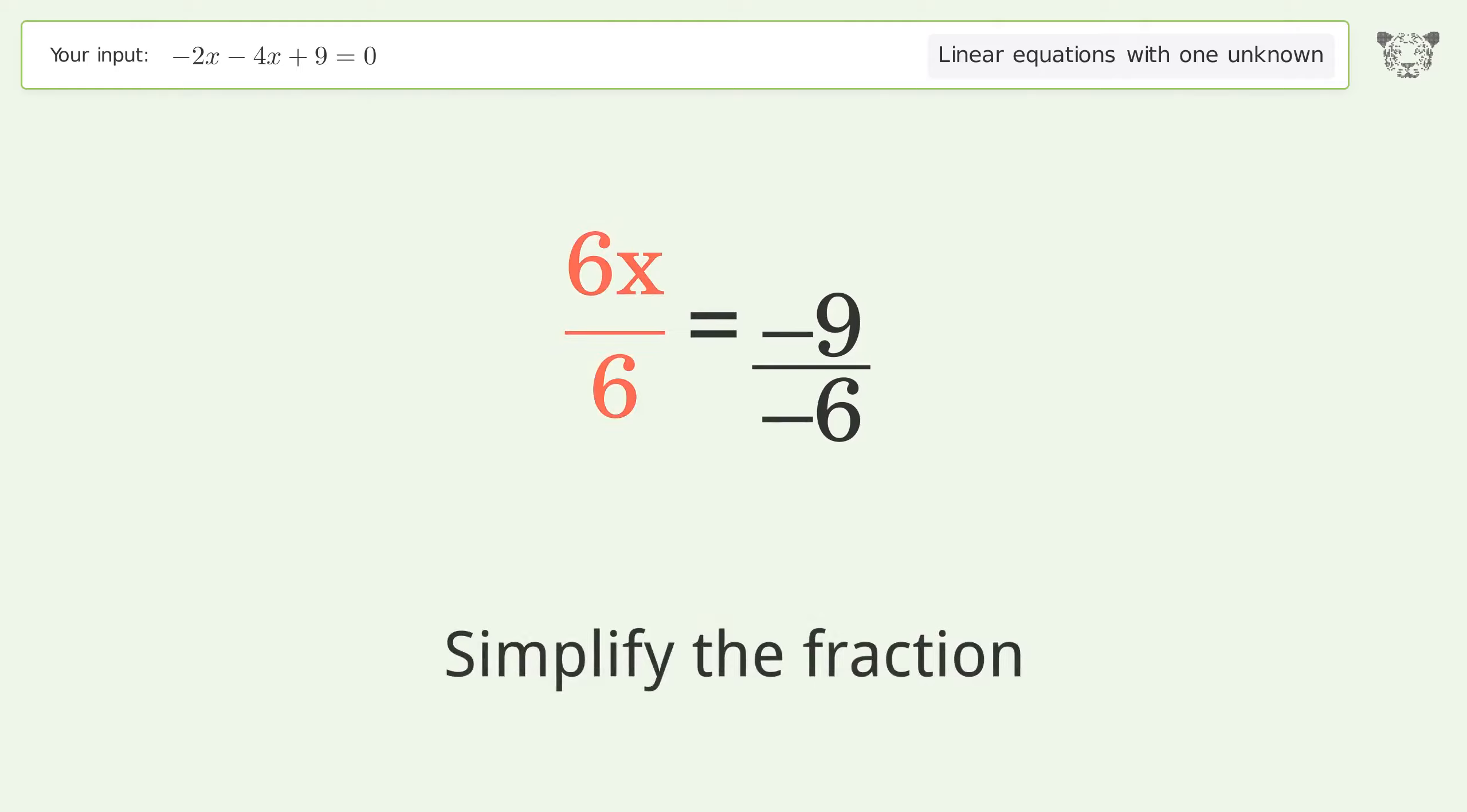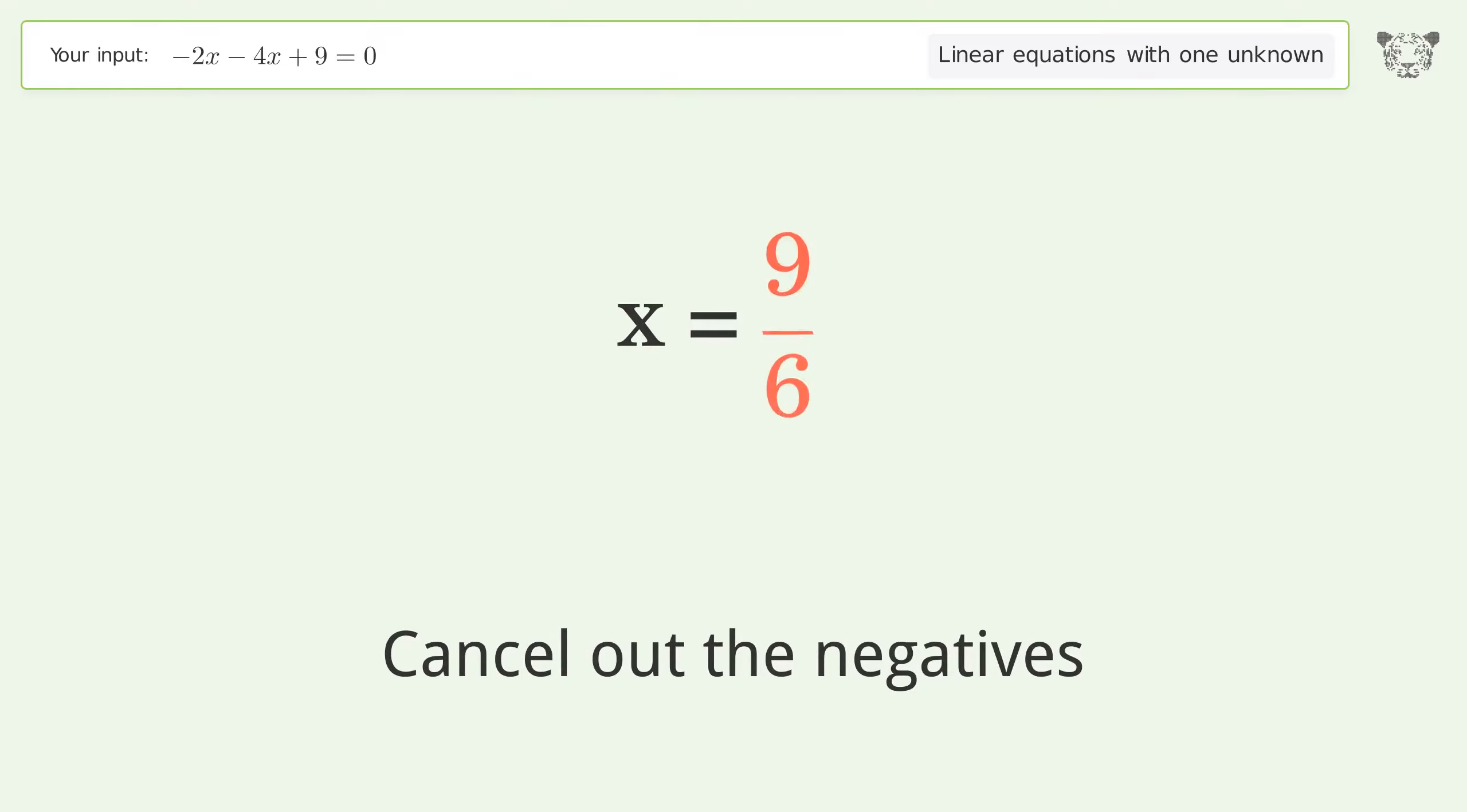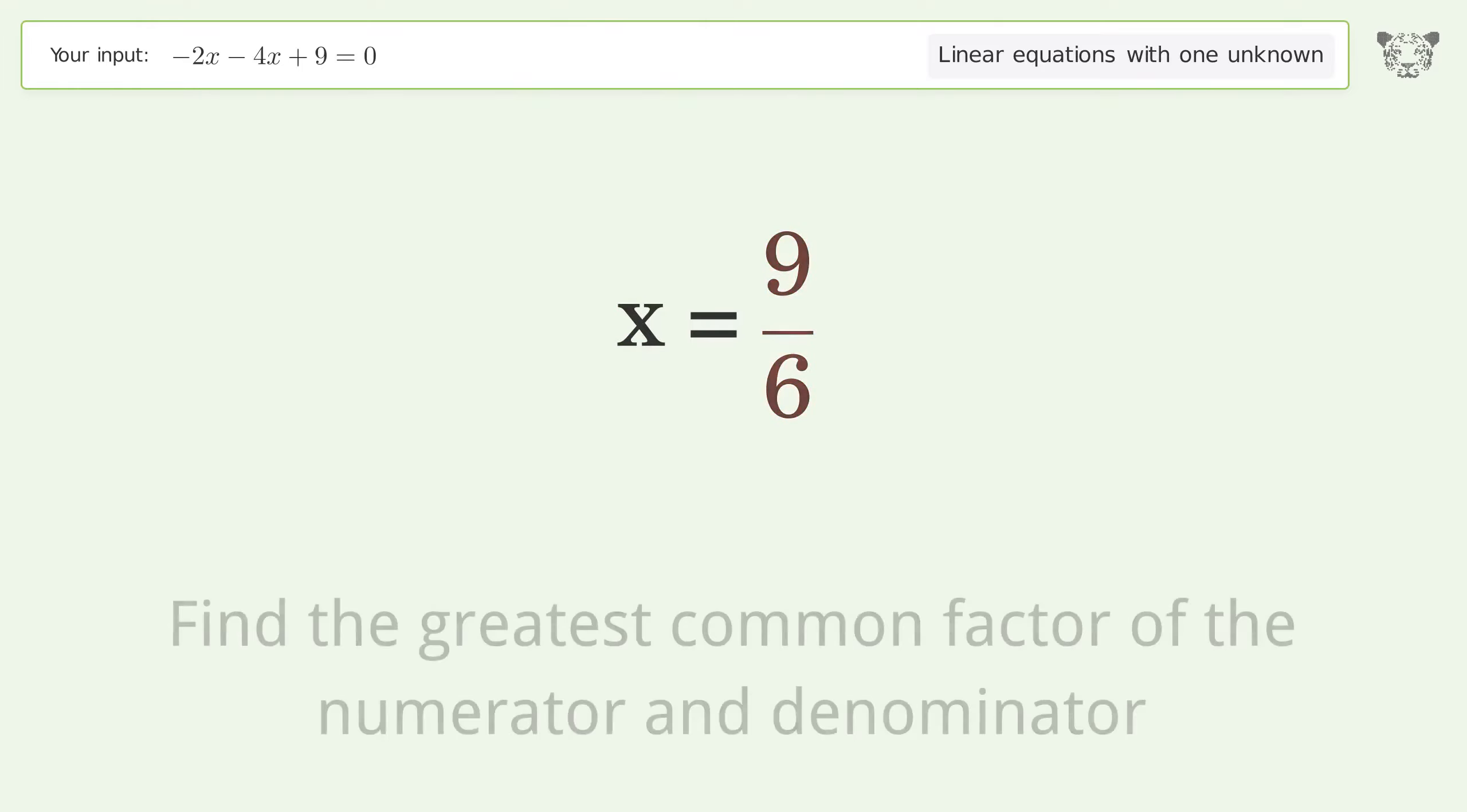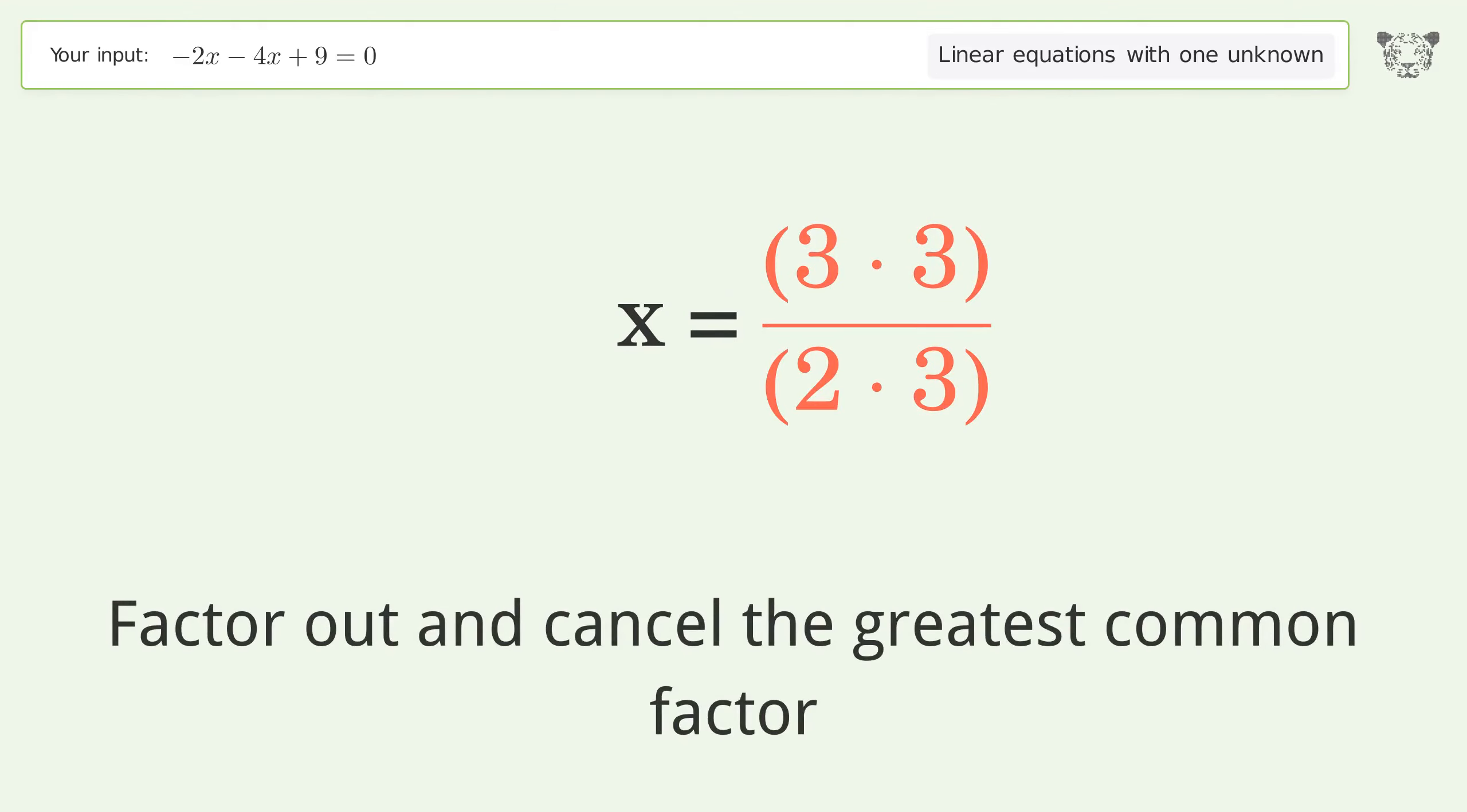Simplify the fraction. Cancel out the negatives. Find the greatest common factor of the numerator and denominator. Factor out and cancel the greatest common factor.